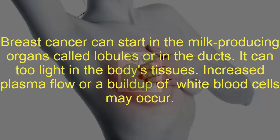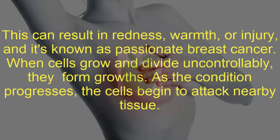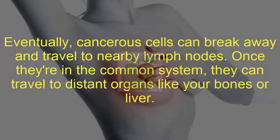Increased plasma flow or a buildup of white blood cells may occur. This can result in redness, warmth, or injury, and it's known as inflammatory breast cancer. When cells grow and divide uncontrollably, they form growths. As the condition progresses, the cells begin to attack nearby tissue. Eventually, cancerous cells can break away and travel to nearby lymph nodes.